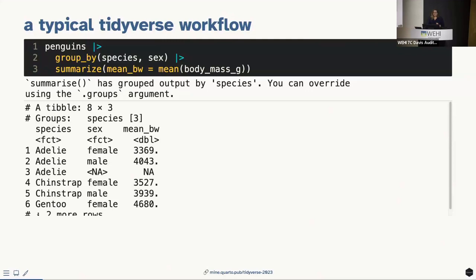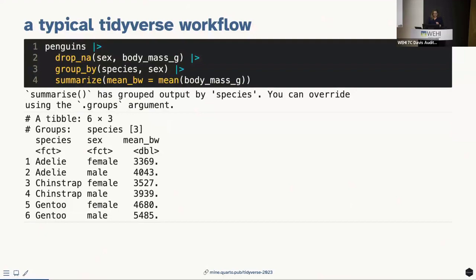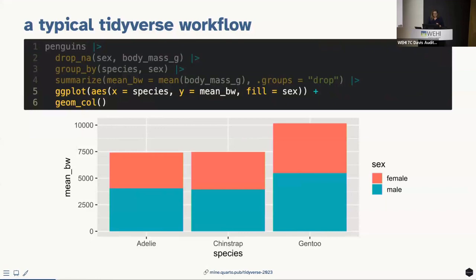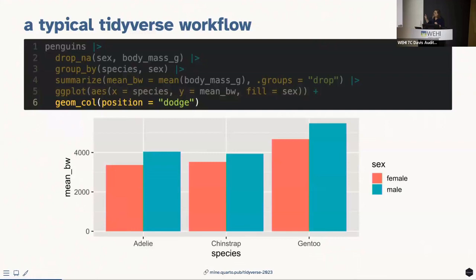You might calculate the mean body weight and notice a warning about NAs. You drop those NAs, address the message about grouped data, and then pipe the result into a visualization pipeline to make a bar plot. A dodged bar plot makes a bit more sense. As a statistician, plots showing only the mean without variability bother me, but this is a typical first-day tidyverse pipeline.